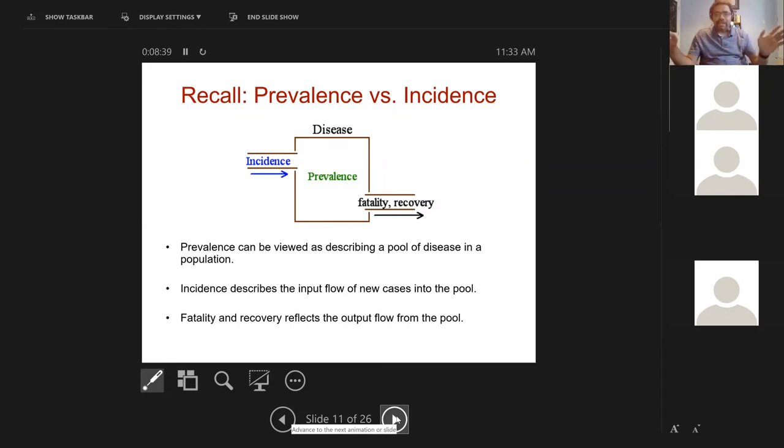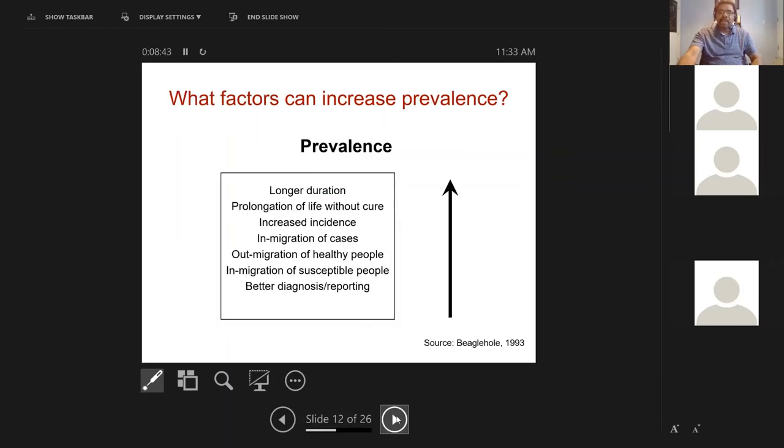So anything that is acute short duration, think incidence. Anything that's likely to be lifelong or a long period of time, think prevalence. So what factors can increase the prevalence of any disorder in a given community? As we discussed, if you have disease for life, then prevalence will always go up. Long duration illness will always keep adding to the prevalence pool because people stay in the disease pool forever. Prolongation of life without cure.